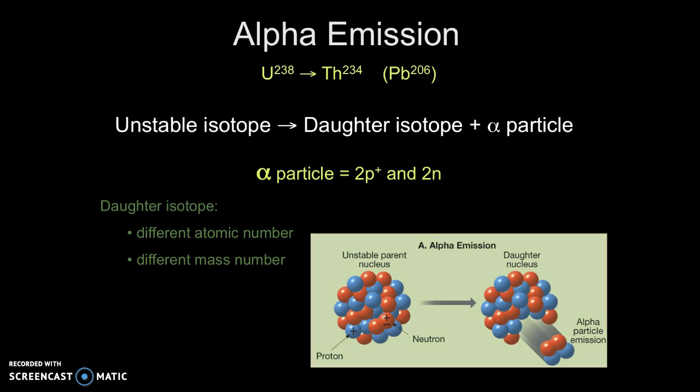The new daughter atom has a different atomic number, it's two less, and a different mass number, so it has fewer heavy particles inside of it. One example of alpha emission occurs when uranium-238 decays into thorium-234. This decay process is only one step in the ultimate decay of uranium-238 into lead-206. The diagram that we're looking at here shows the parent nucleus ejecting out that alpha particle to become the daughter nucleus.